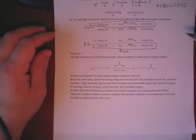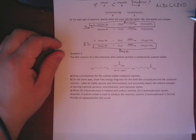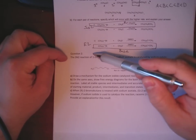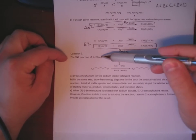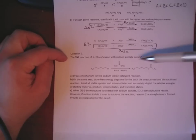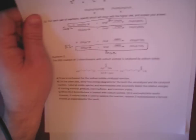So for question two, it's a multifaceted question looking at the SN2 reaction of one chlorohexane with sodium acetate catalyzed by sodium iodide. So the first question is, can you draw the mechanism of this reaction?